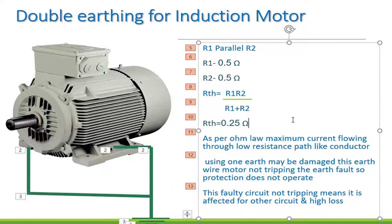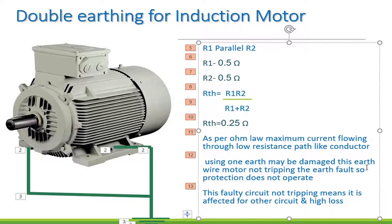If the motor has a fault, the fault current will increase. As per Ohm's law, maximum current flows through the low resistance path. When resistance is reduced from 0.5 to 0.25 ohms, the current flow increases through that path, which is important for fault detection and protection.